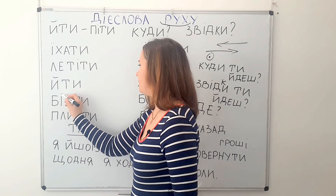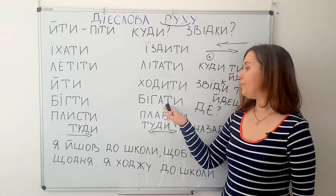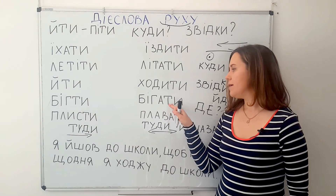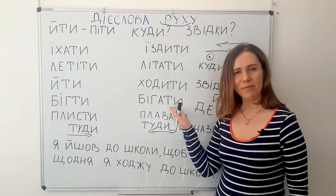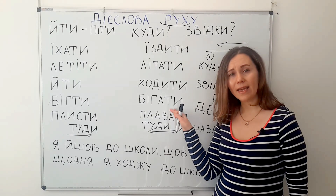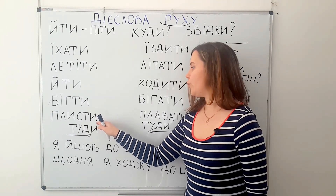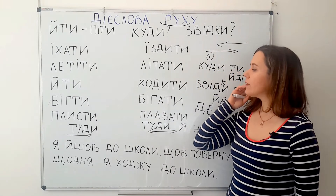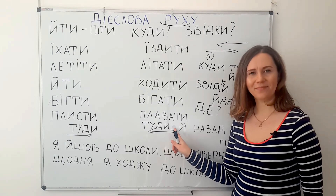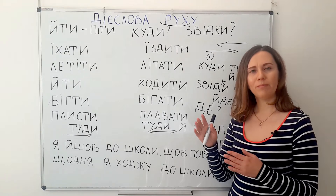БІГТИ means 'to run' — one-way. But БІГАТИ also means to run, but many times — maybe every day around the lake, every day in the park. ПЛИСТИ means 'to swim' — one-way. But ПЛАВАТИ means to swim regularly. So: ПЛИСТИ — ПЛАВАТИ.